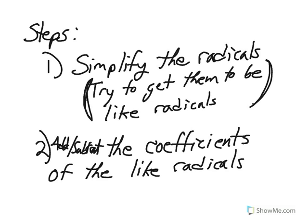Here are the steps for combining like radicals. One: simplify the radicals—try to get them to be like radicals. Two: add or subtract the coefficients of the like radicals. Please pause the video so you may copy these notes. Thank you.